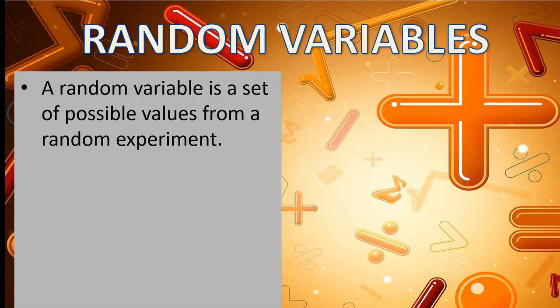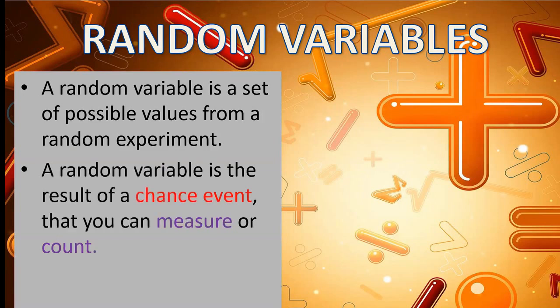So, on this experiment, the set of possible outcomes is given set, space, is equivalent to head, tail. Another definition of Random Variable is the result of a chance event that you can measure or count.